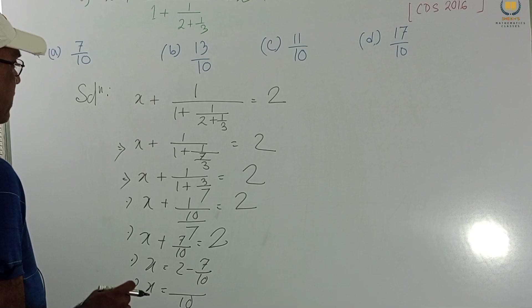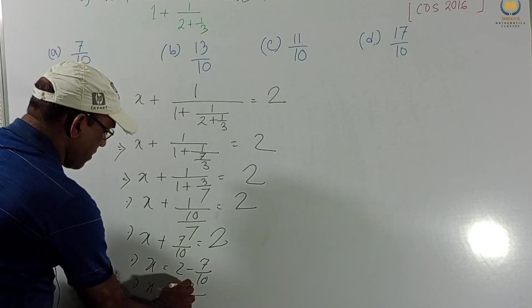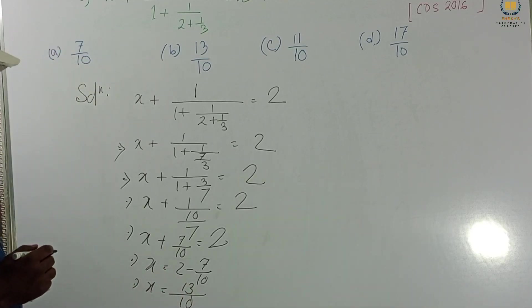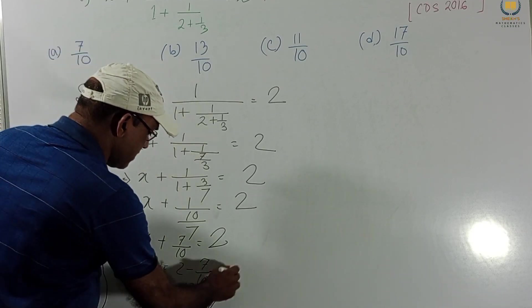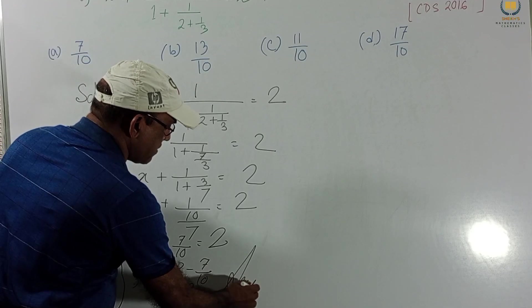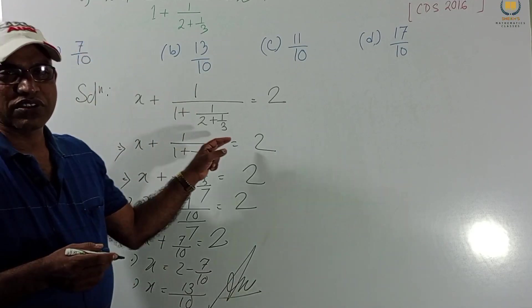then we get 13. 20 minus 7 is 13. So, option B is our answer. This is the final answer. Just you have to solve systematically.